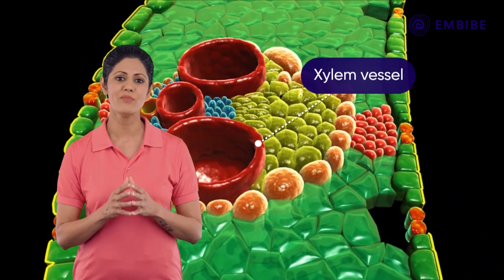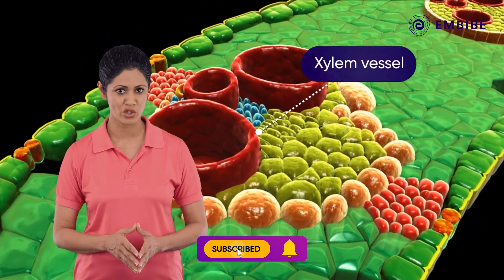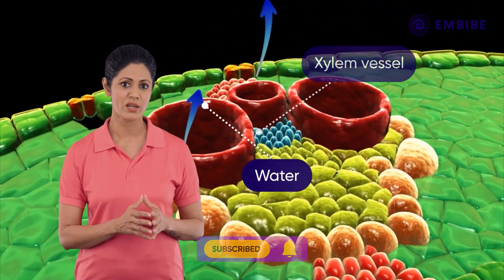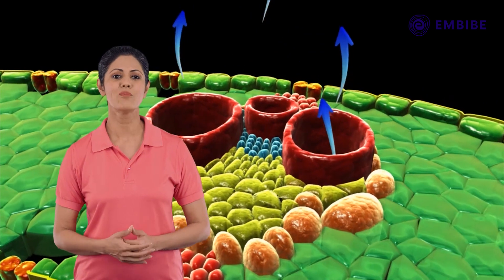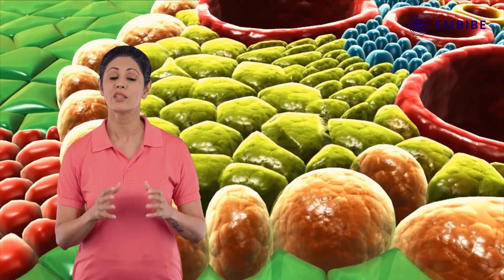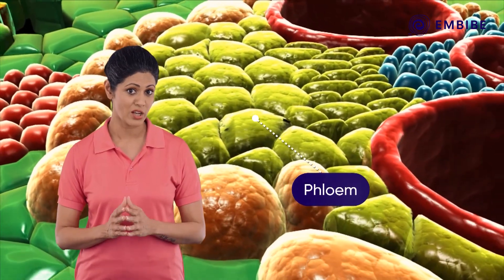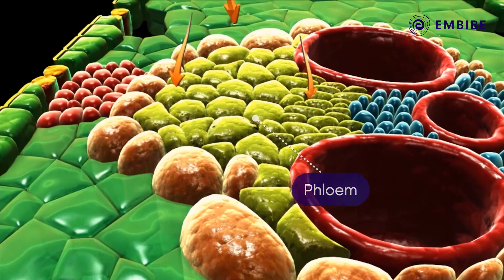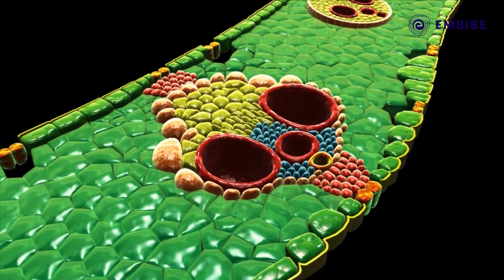Xylem vessels function in the transport of both water and mineral nutrients. The smaller cells located in the vascular bundles constitute the phloem. The phloem functions largely to translocate the prepared food.